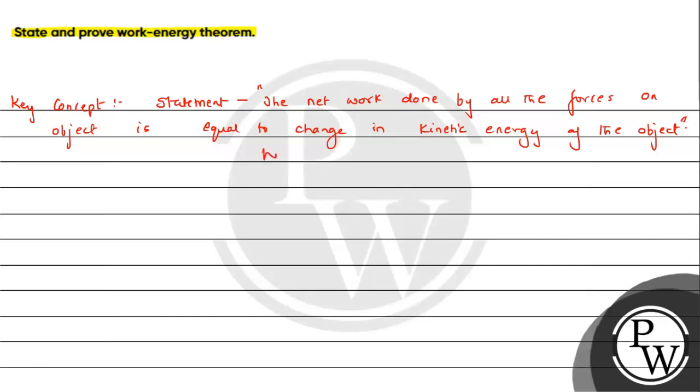Now, if we look at this mathematical form, it is W net is equal to KF, that is kinetic energy final, minus kinetic energy initial. So we will try to derive this formula. We will try to prove it.